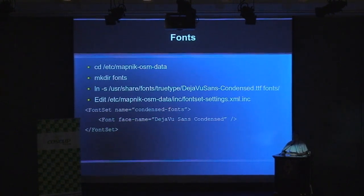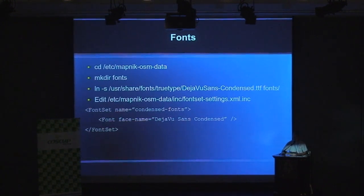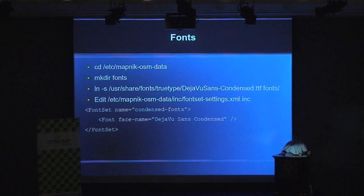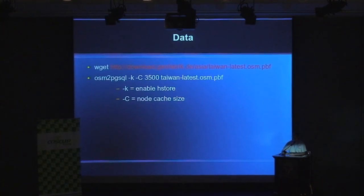In the include directory there is a file called font set settings. Here we specify a font set — for example, I created a 'condensed fonts' set which has the DejaVu Sans Condensed font, which I use for my highway shields because I need a narrower font. There are also other font sets already defined like bold fonts and normal fonts, and we can adjust those, but we need to link them into the fonts directory.